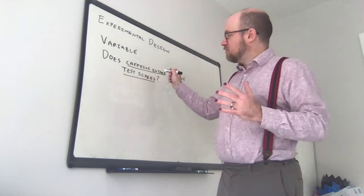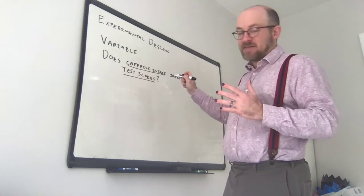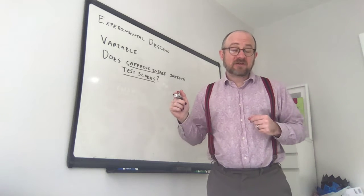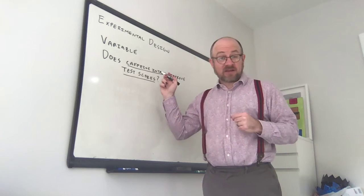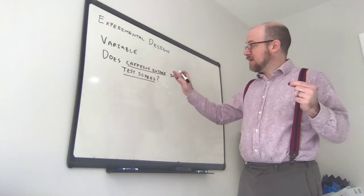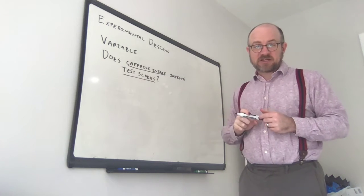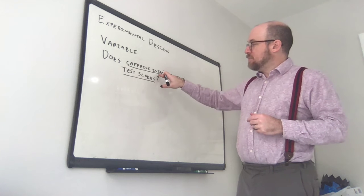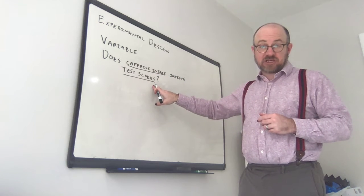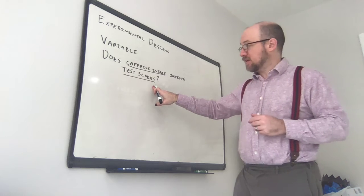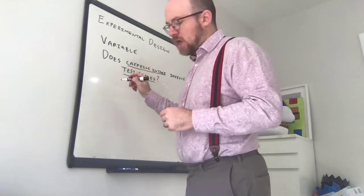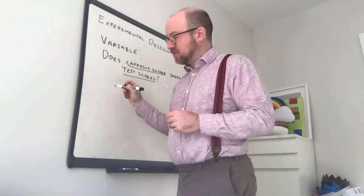The amount of caffeine taken and the test score are both quantitative pieces of data — quantitative continuous, if you remember from last class, because there are lots of different possible values. One is a measurement, one is a percentage. So we take one piece of quantitative continuous data and want to know if it causes a change in another piece of quantitative continuous data. These are both called variables, and we split them into two different names.